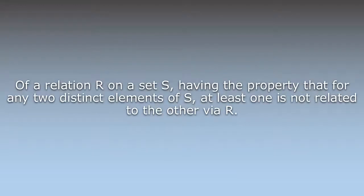Antisymmetric: of a relation R on a set S, having the property that for any two distinct elements of S, at least one is not related to the other via R.